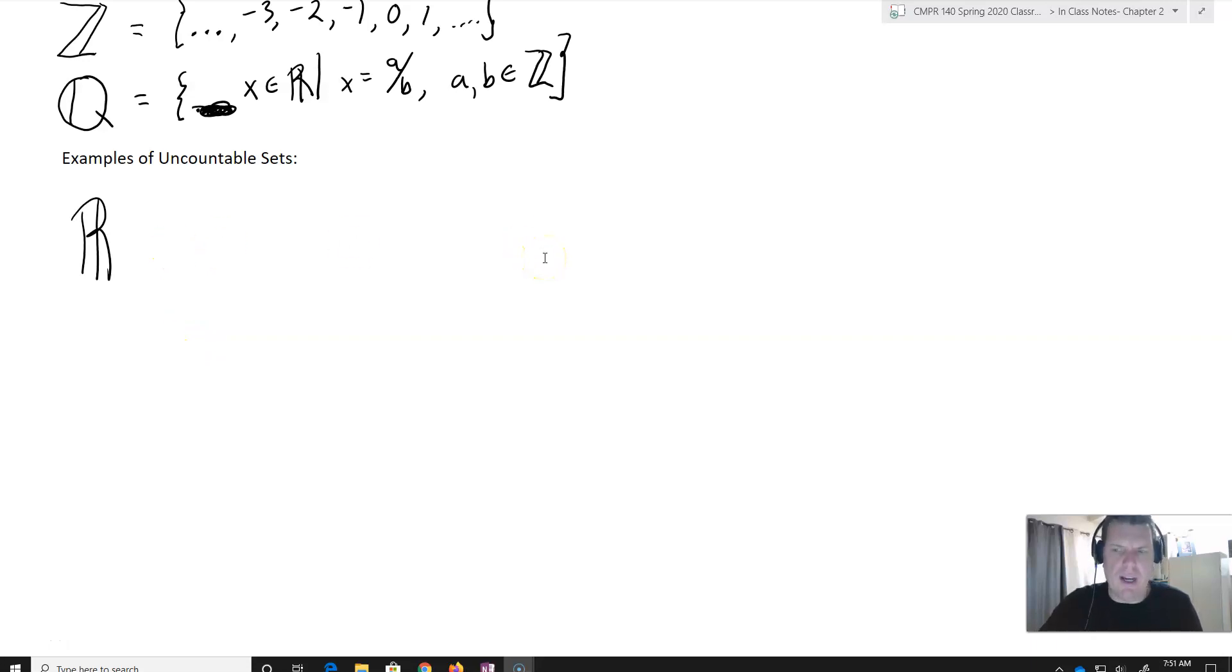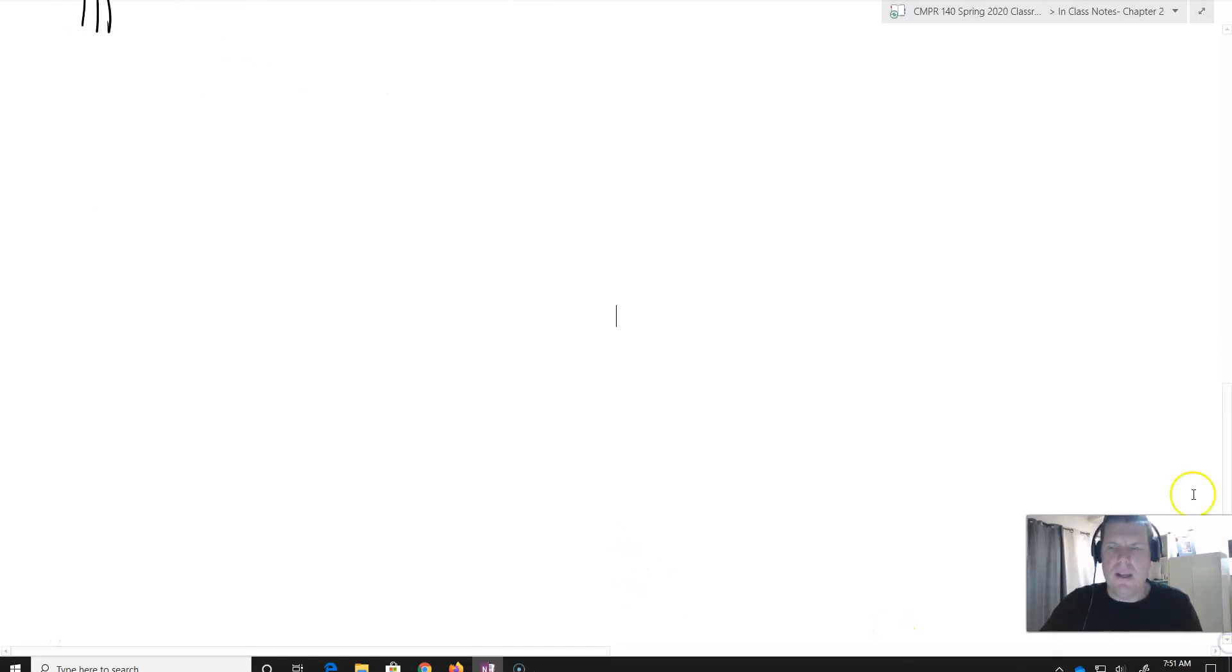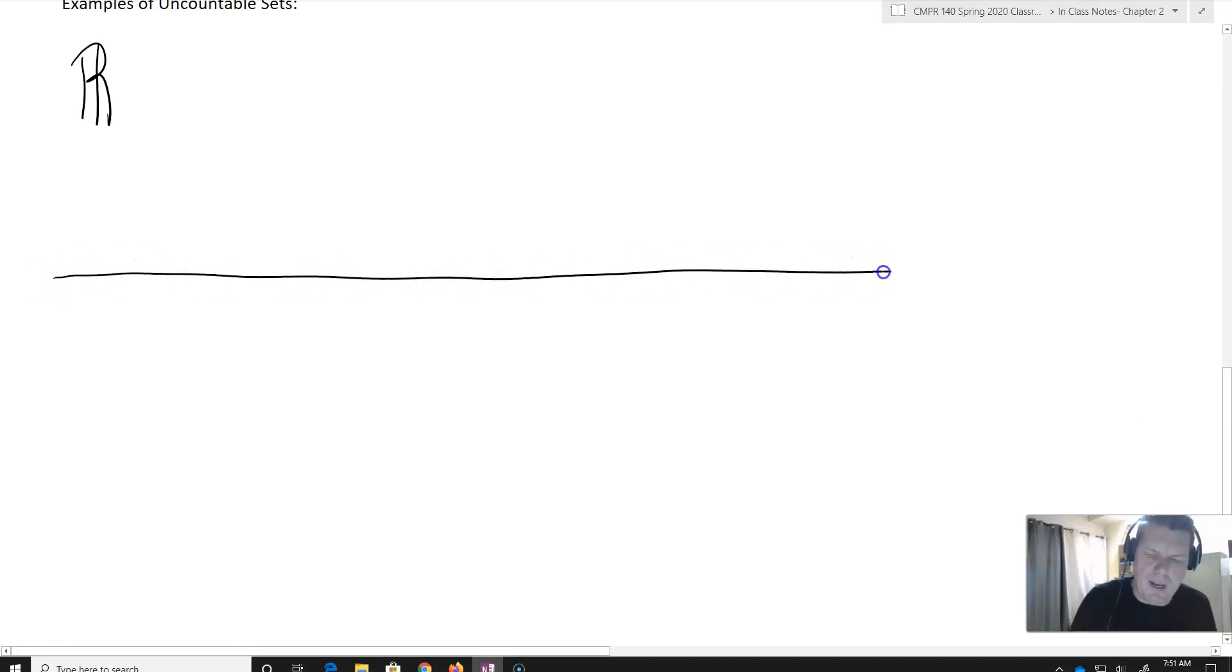An example of an uncountable set would be the real number line. The real reason why the real number line actually turns out to be uncountable is because it's what's called dense. What we want to imagine is that it's a little theoretical. We won't get too deep into it now.